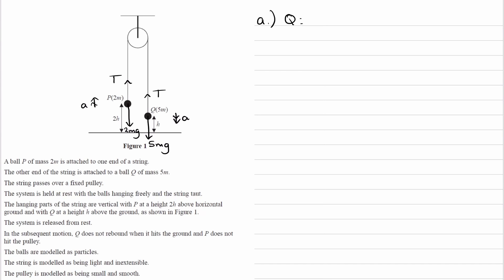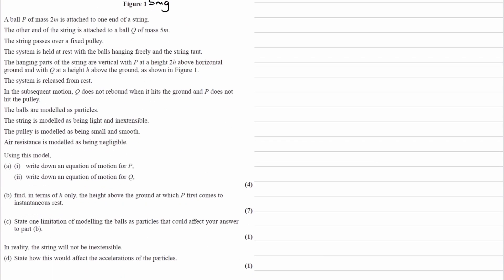So Q accelerates downwards, therefore the resultant force is downwards. That overall downwards force will be 5mg minus T, and that will be equal to ma, mass of Q times A, let's call that equation 1. And then for P, the resultant force is upwards, in the same direction as acceleration, and so that will be T minus 2mg, which will be equal to mass, P's mass multiplied by acceleration. And that's our first four marks.